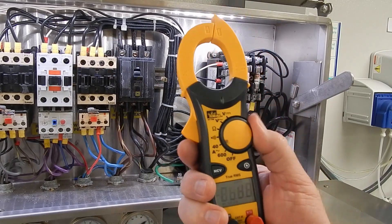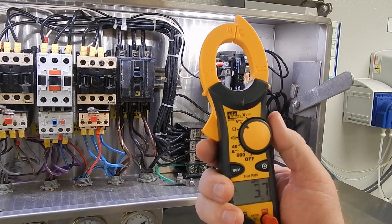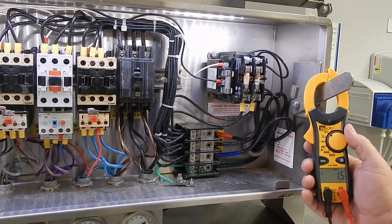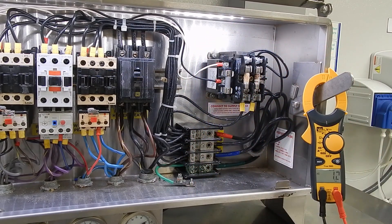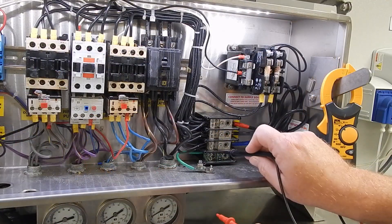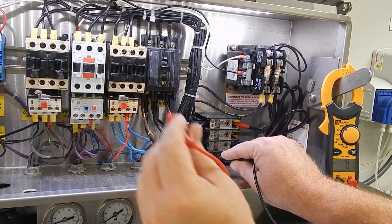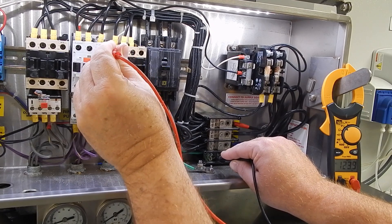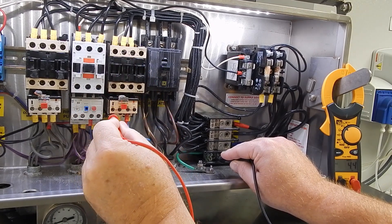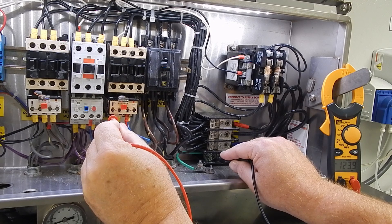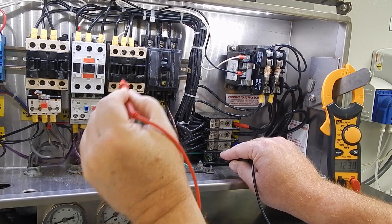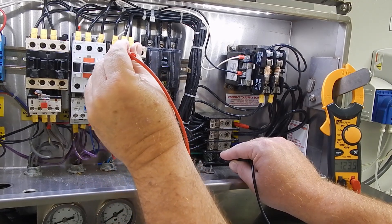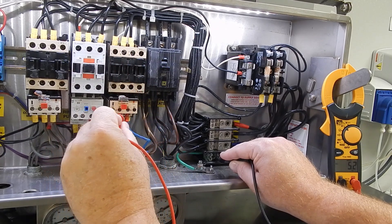Let's take a look at how we are testing this on the machine. Again, we are setting our multimeter to AC voltage. One meter lead goes to ground, and we go to the top side of the wash motor contactor on L1, and we test the output side of the contactor on L1. We are verifying voltage coming through the contactor.